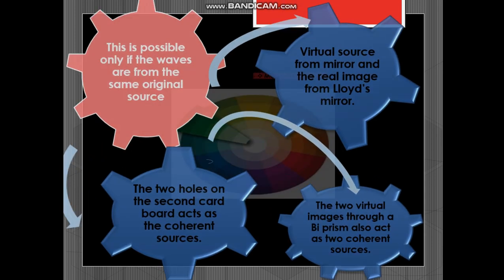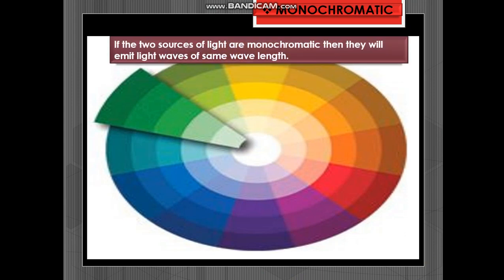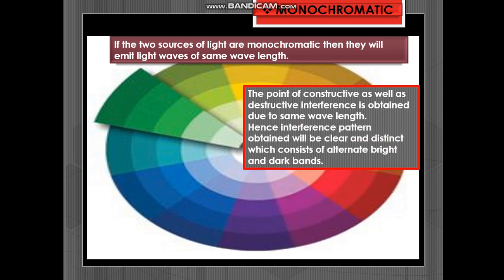Now let us see these. Now if it is monochromatic. If the two sources of light are monochromatic then they will emit light waves of the same wavelength. The point of constructive as well as destructive interference is obtained due to same wavelength. Hence interference pattern obtained will be clear and distinct.